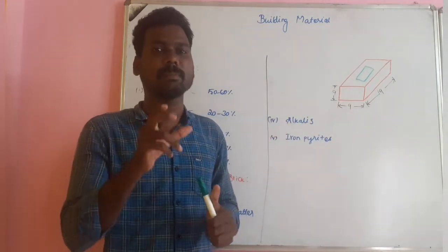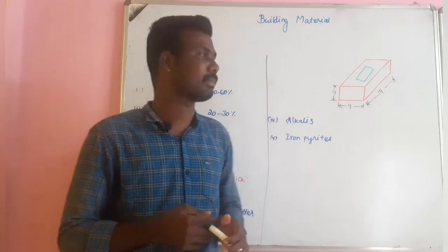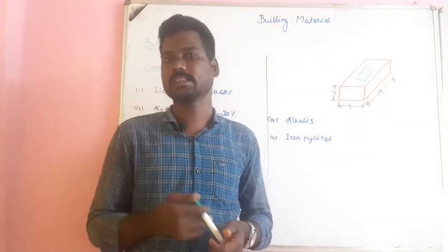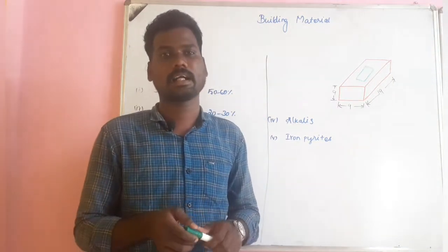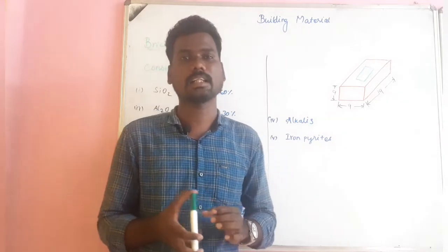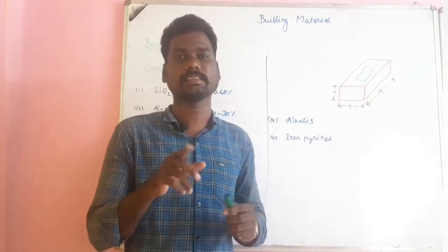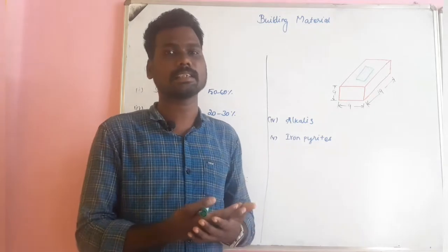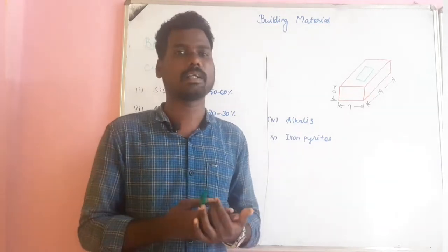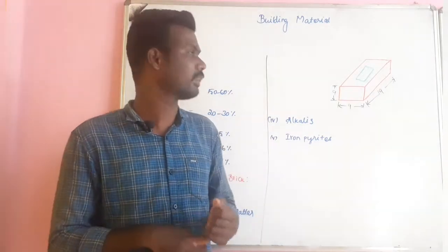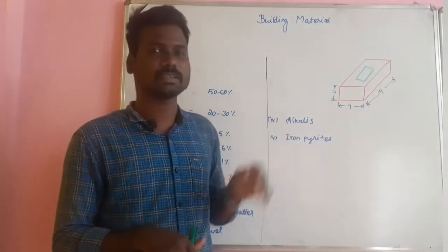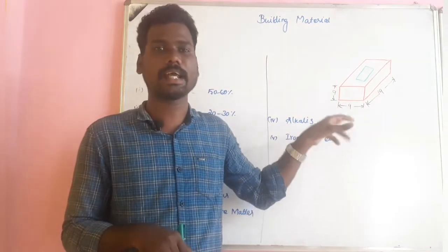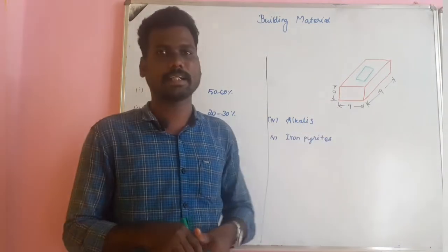There is also a tile brick and a country brick. The tile brick size is 10cm × 4cm × 1cm. The country brick size is 9 inches × 4.5 inches × 3 inches. For SSJ exam questions, you should know the standard size, nominal size, tile brick size, and country brick size.